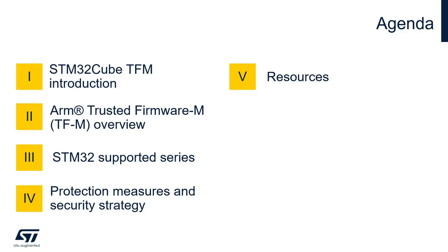Let's start with the agenda. First, we're going to go through an introduction of the TFM solution for STM32 microcontrollers. Then, we'll go a bit more into the details of the ARM Trusted Firmware solution, focusing on the architecture and offered features. We will then present which microcontrollers are supported in the current implementation. Next, we will focus on the protection measures and on the security strategy that ST used to enhance the implementation for STM32. And finally, we will share where you can find all the resources that you may need to move on with your project.